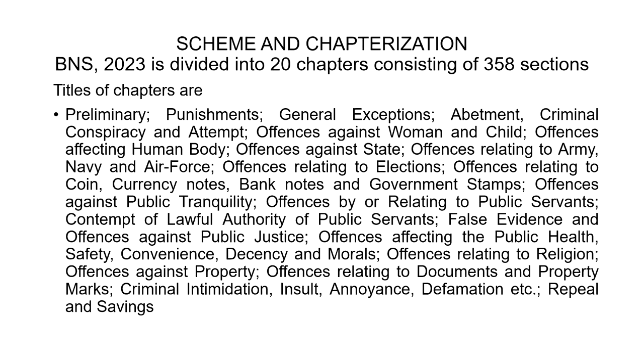Then coming to general exceptions — there is a separate chapter titled general exceptions, and these general exceptions are available in respect of all the crimes mentioned under the criminal law. Then coming to abetment — that is encouraging, instigating anyone to commit a crime — there is a chapter which deals with abetment, criminal conspiracy and attempt. These are inchoate crimes which have all been clubbed together and placed in one single chapter, whether we are talking about conspiracy, abetment, or attempt to commit a crime. These three are now categorized together as inchoate crimes — incomplete crimes — unlike in the IPC wherein they were scattered.